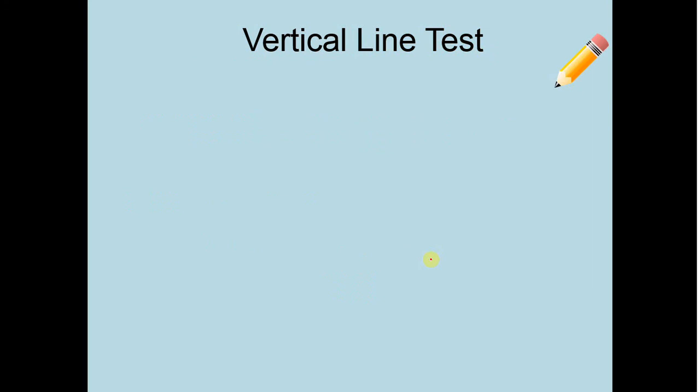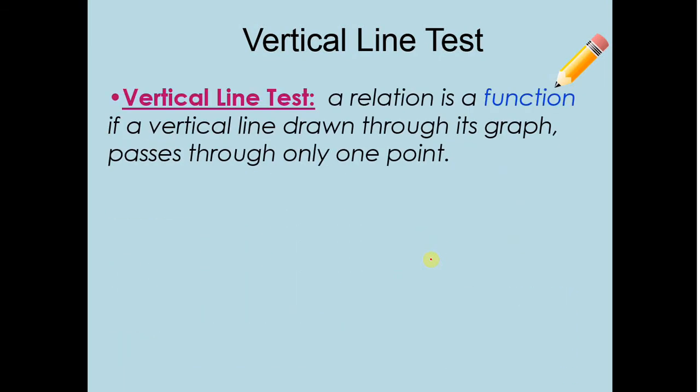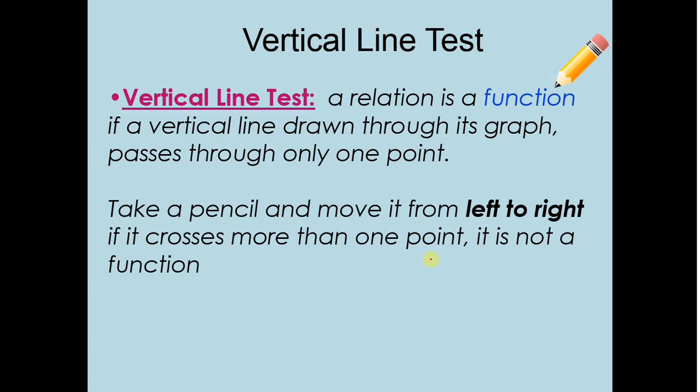The vertical line test is a way for us to test if we have a function or not when given a graph. The vertical line test tells us, if you have a function, if a vertical line can be drawn through its graph and it passes through only one point. This is how I do the vertical line test. I take a pencil and I move it from left to right and if it crosses my graph more than once, I don't have a function.